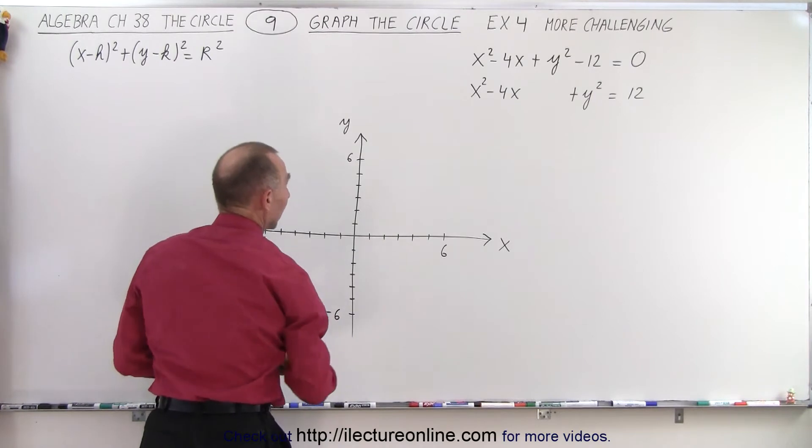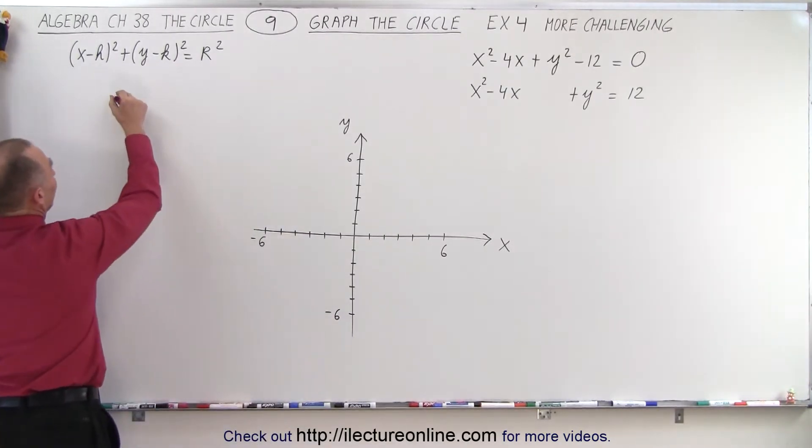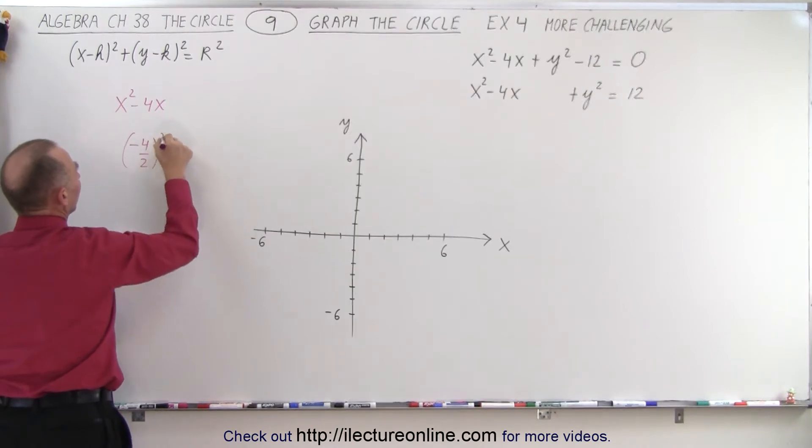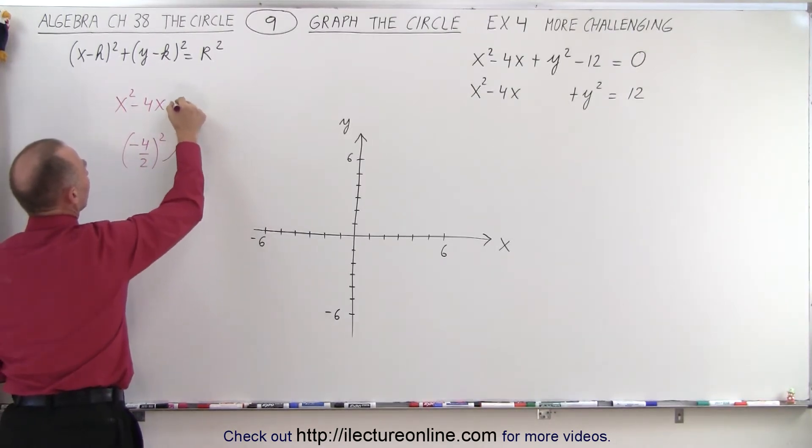Let's do it in a different color, and let's do it on the side here. We have x-squared minus 4x. And so what we're going to do is we're going to take this and divide it by 2, and then square that and place it over here.